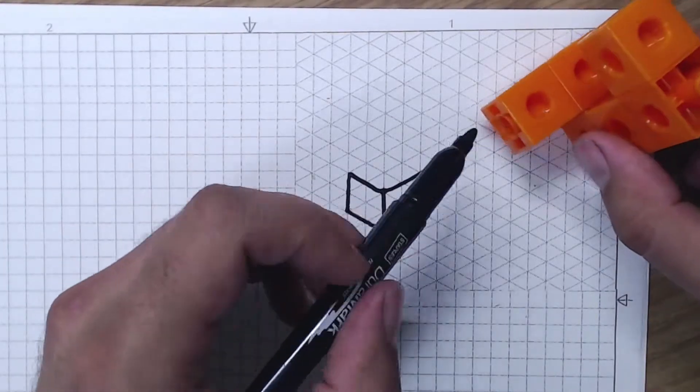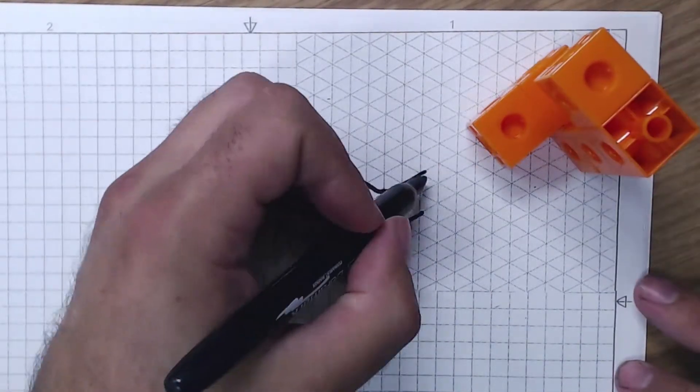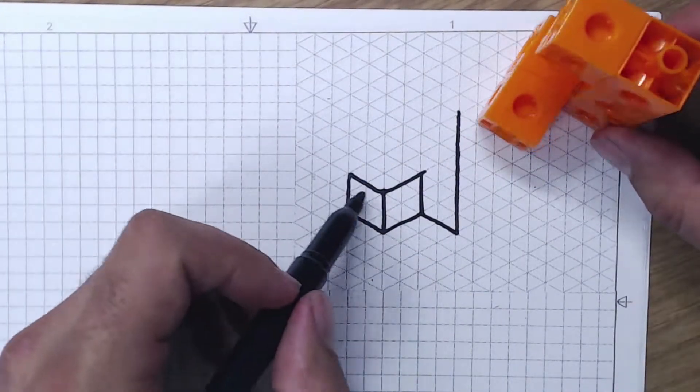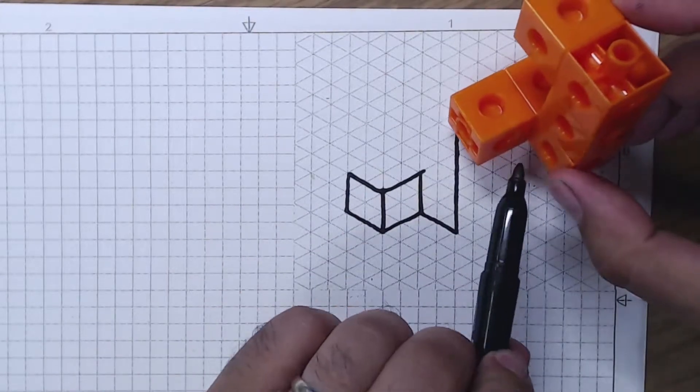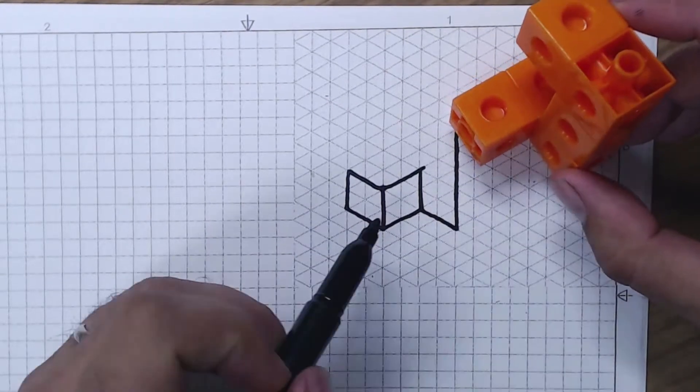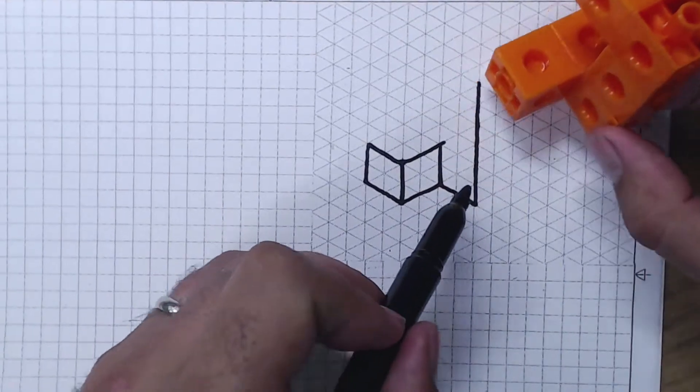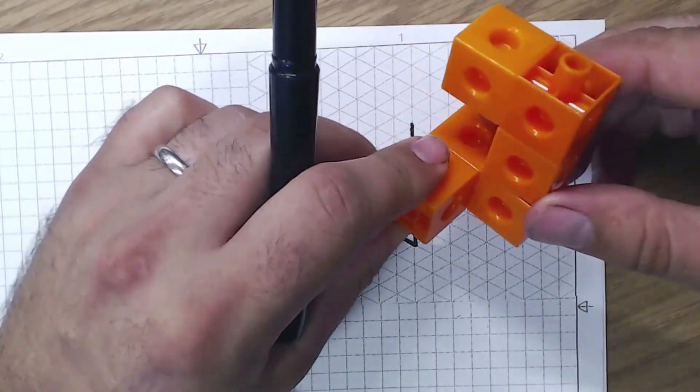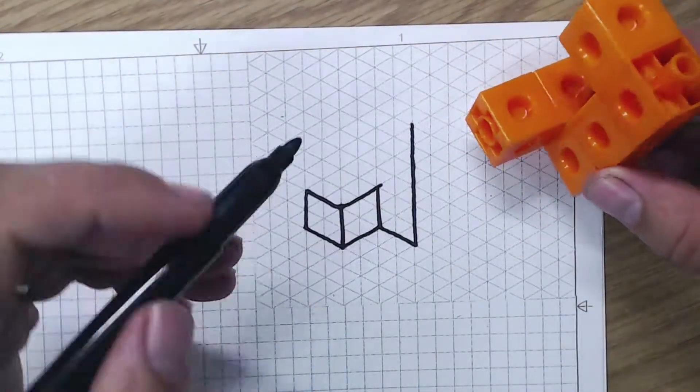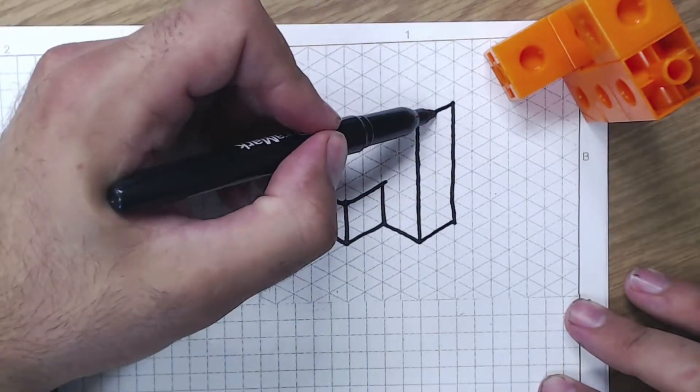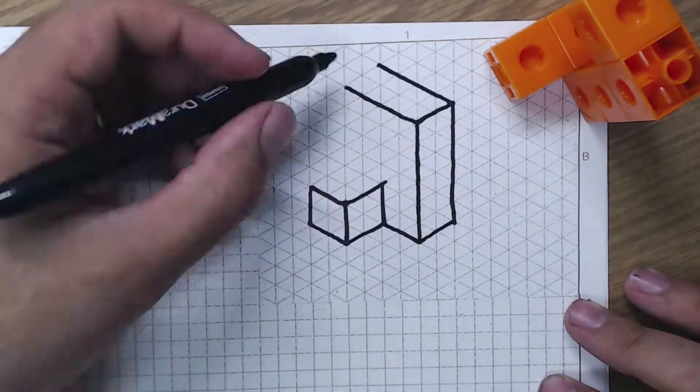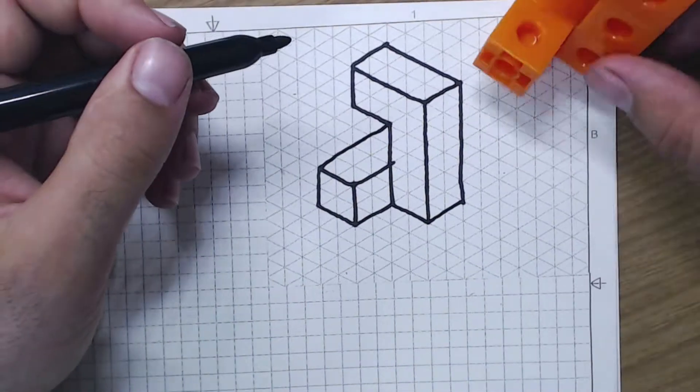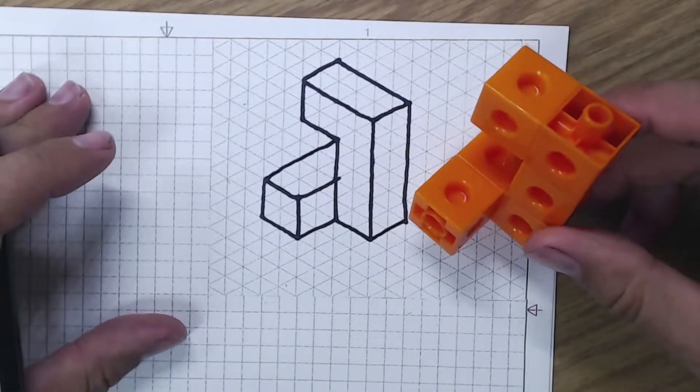I'm going to start off by doing this front corner and working my way back from there. This box here is my front of this one. Now I have the front box, this piece here. I've got this side piece. That's this one here. And I've come all the way up. And that is this big vertical line right here. And that is right there. There it is.